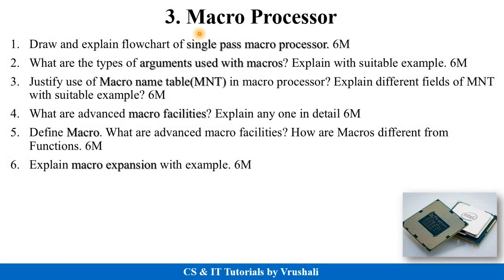The next topic is macro processor. From this topic they will ask: draw and explain the flowchart of a single-pass macro processor for six marks. Next: what are the types of arguments used with macros? Explain with suitable examples for six marks. An important question is: justify the use of macro name table in a macro processor; explain different fields of the macro name table with suitable example for six marks. Also: what are the advanced macro facilities? Explain any one in detail for six marks. How are macros different from functions? Explain macro expansion with example for six marks. Prepare macro definition, macro name table, macro arguments, macro facilities, and macro expansion.